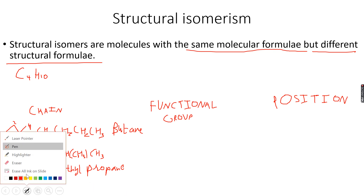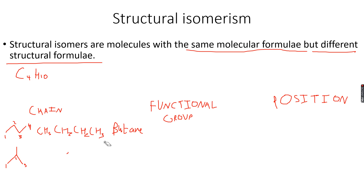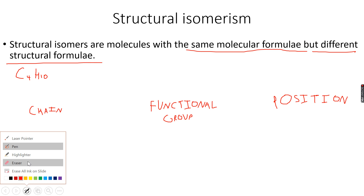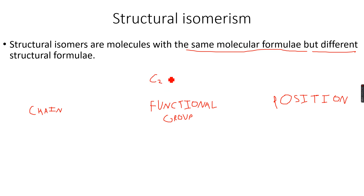Functional group isomerism is when two molecules have different functional groups but the same molecular formula. For example, let's take the compound C2H4O2.